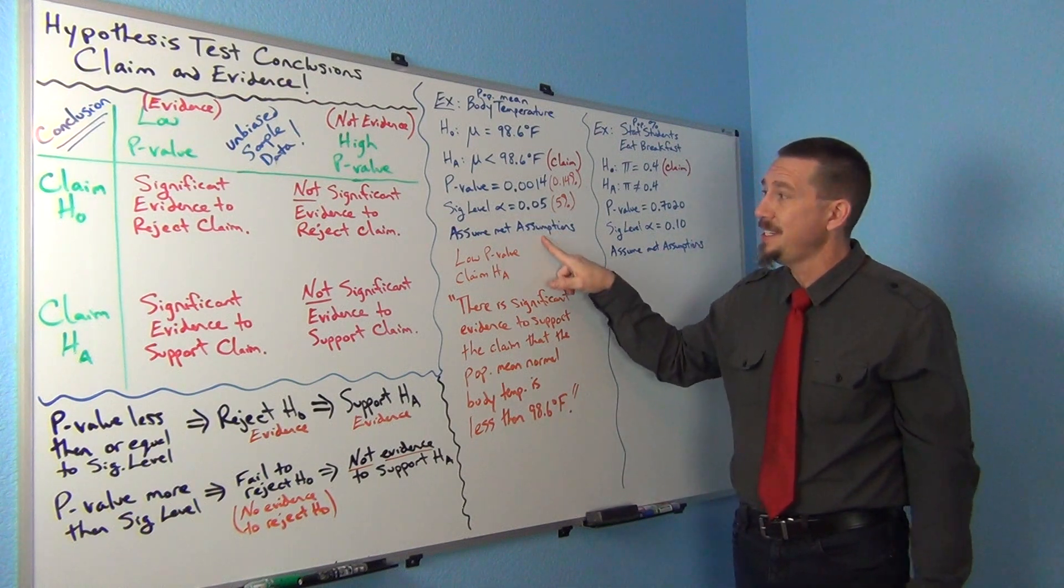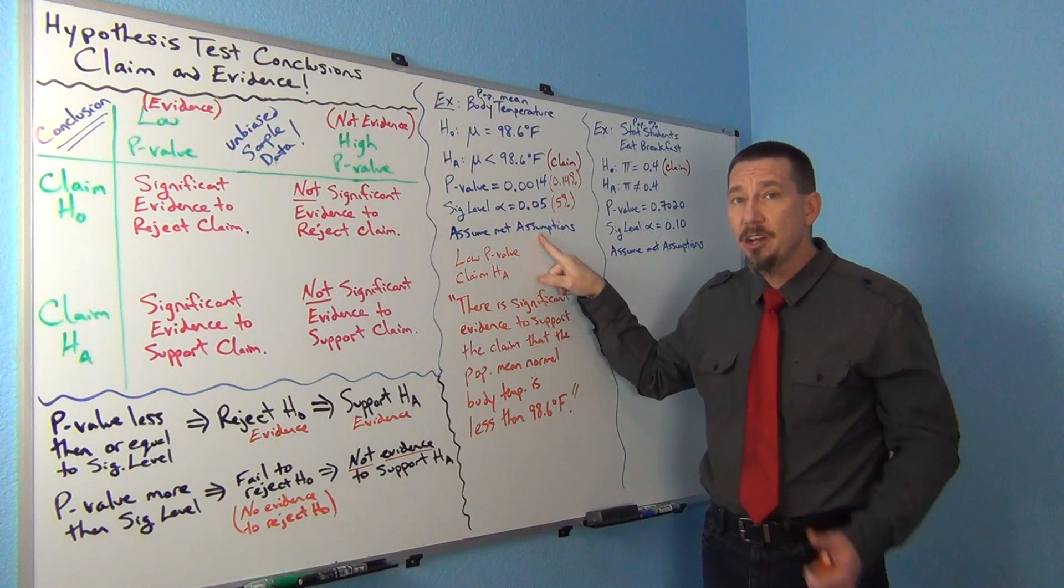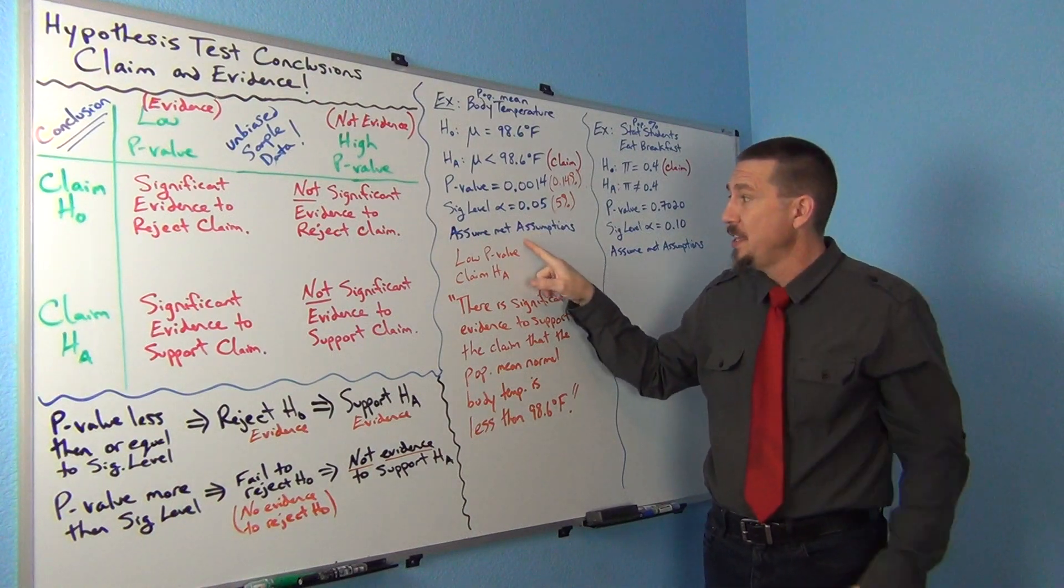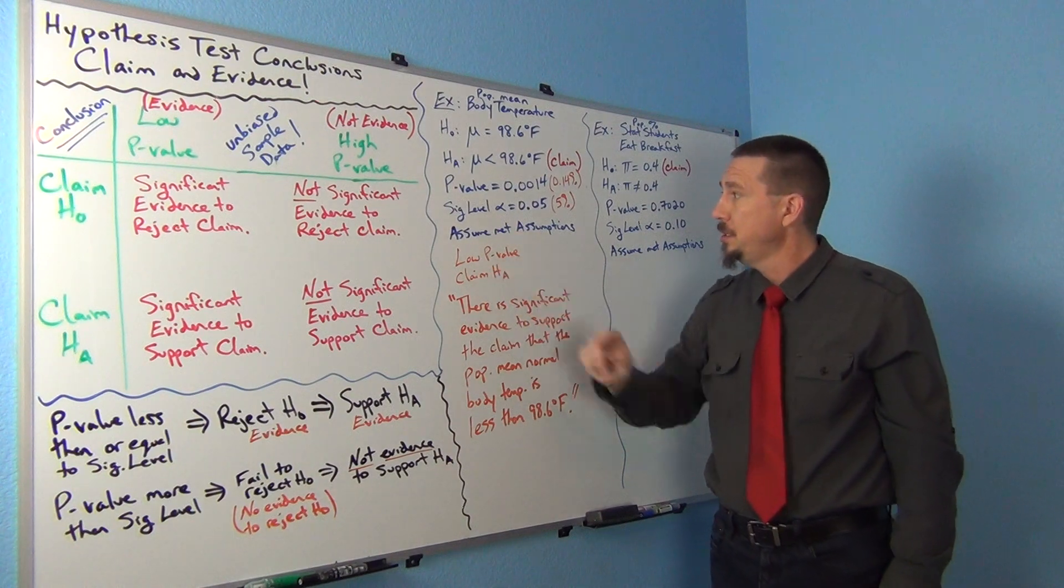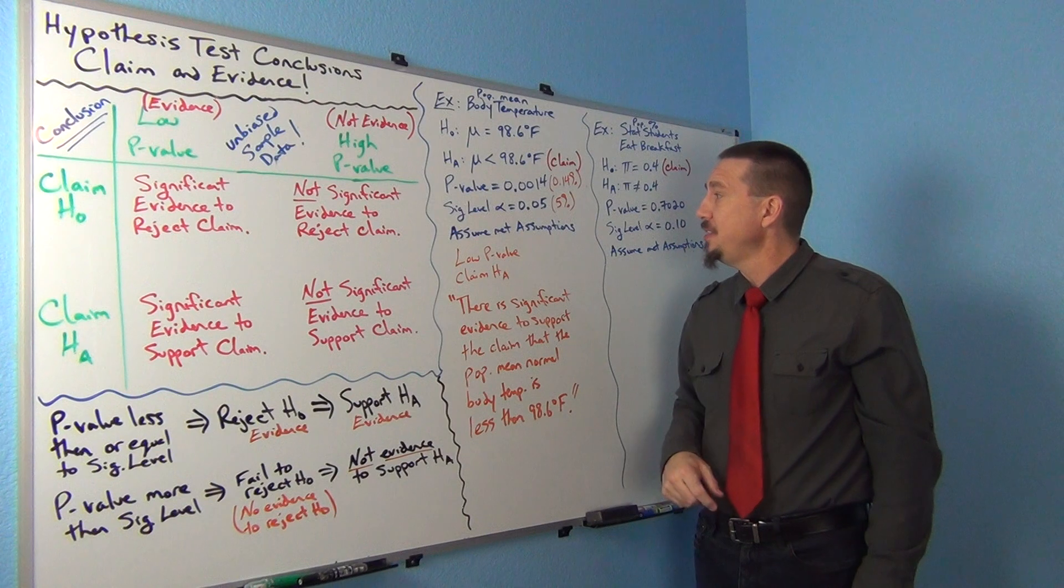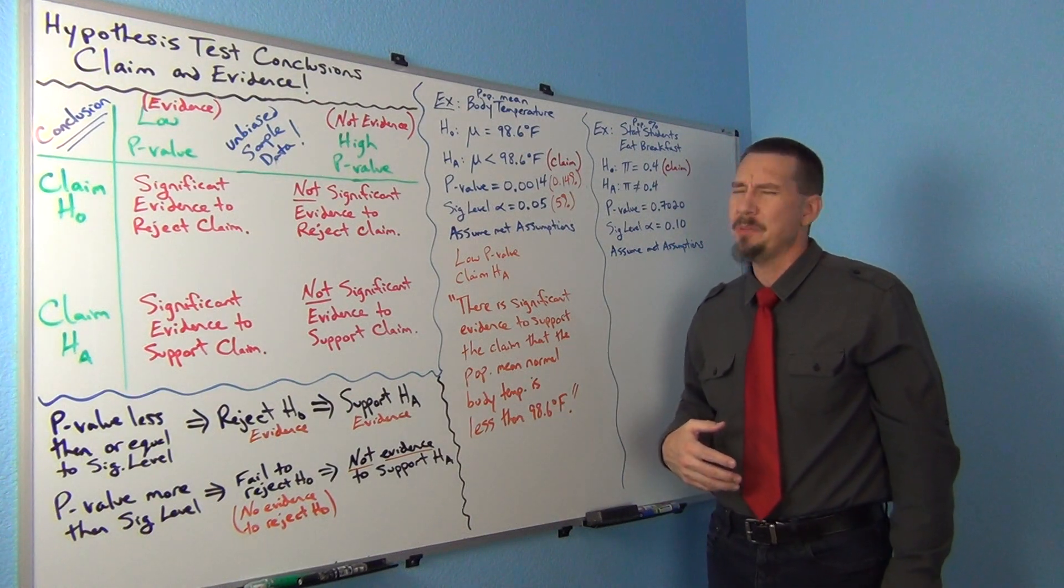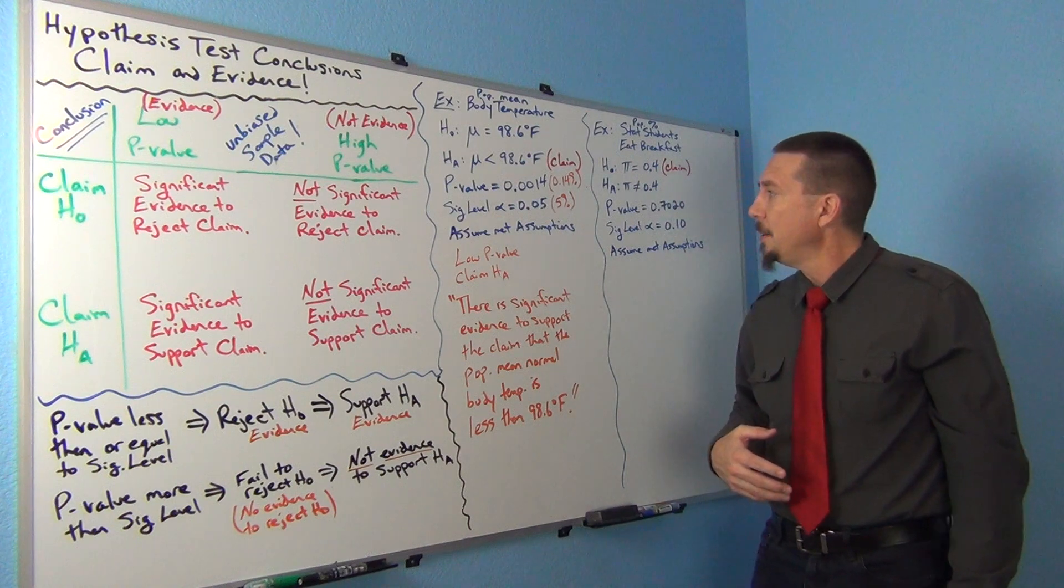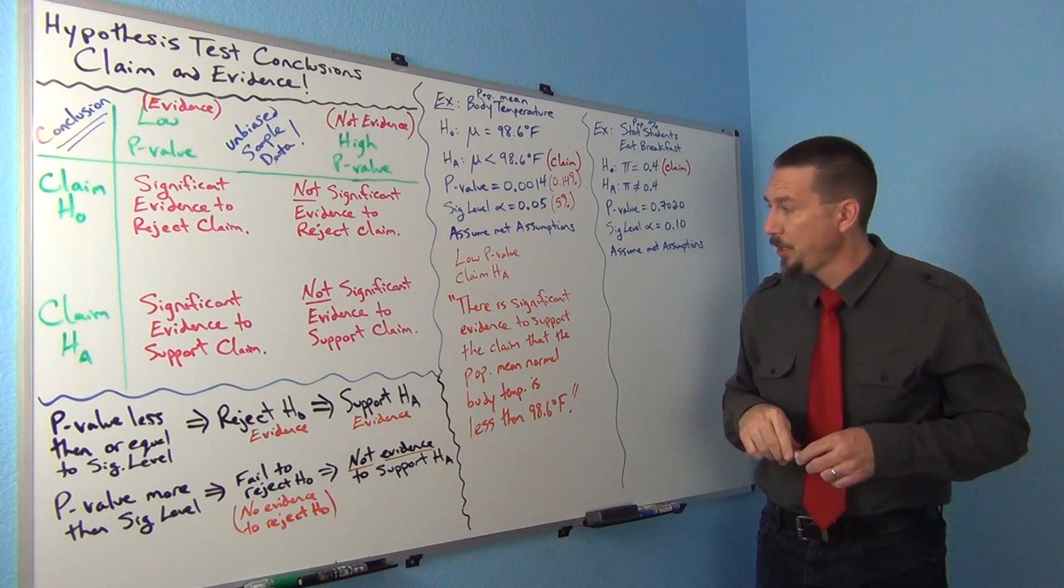Again, we are assuming that this data met all the assumptions. That's actually really important. If it did not meet all the assumptions for the test, then this low p-value would not be considered evidence anymore. So as long as this was random sample data and it was independent and met the 30 or normal requirement, I think this sample size was 50, this low p-value would be considered evidence.